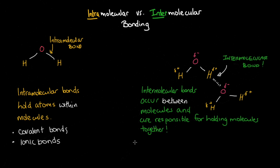The key difference between intra- and intermolecular bonding is that intramolecular bonds occur within molecules, while intermolecular bonds occur between molecules. A classic example of an intermolecular bond is the hydrogen bond, where the slightly positive hydrogen is attracted to the slightly negative oxygen of a second water molecule.